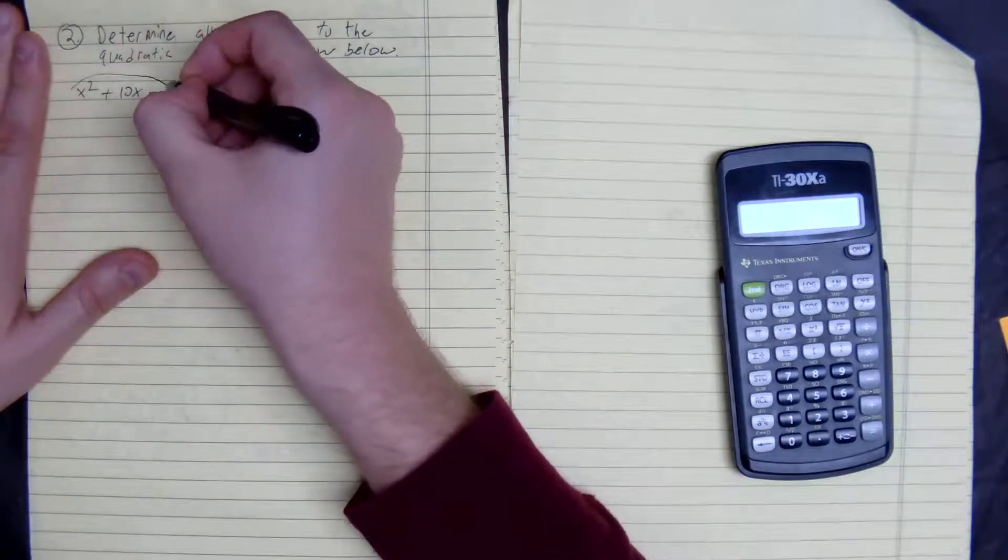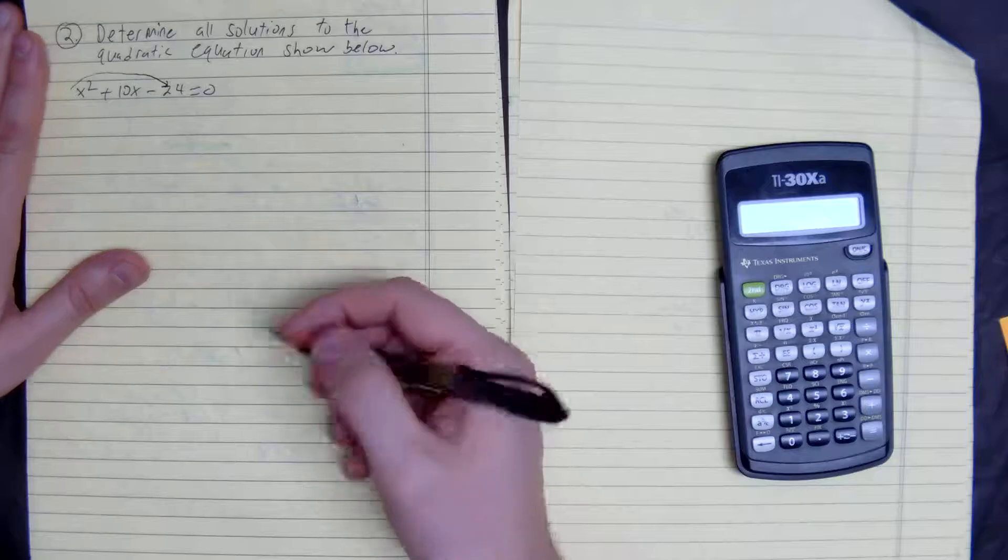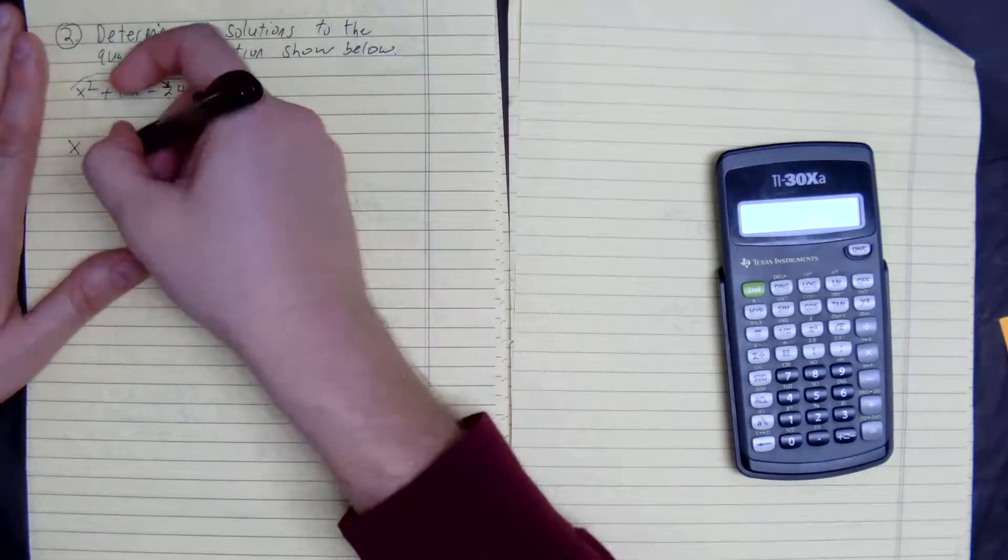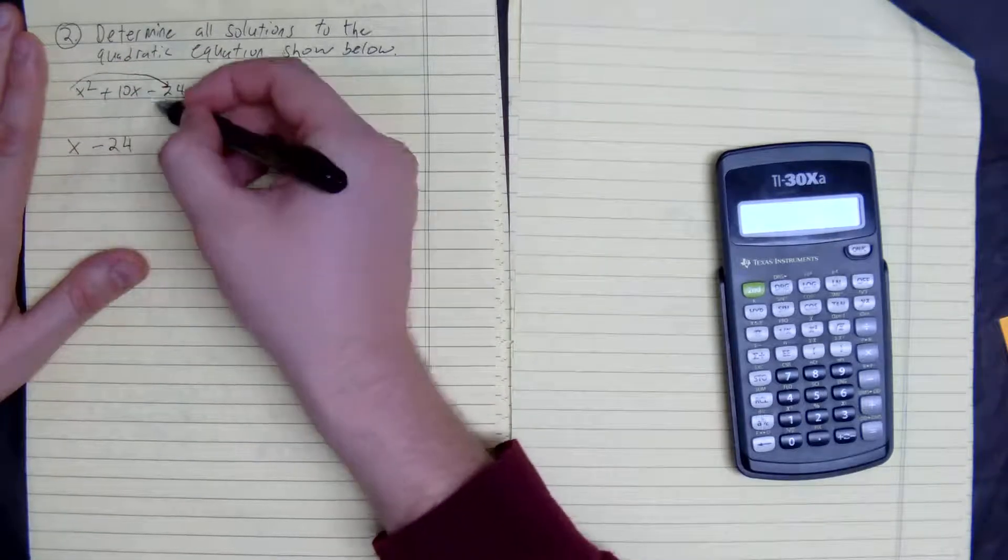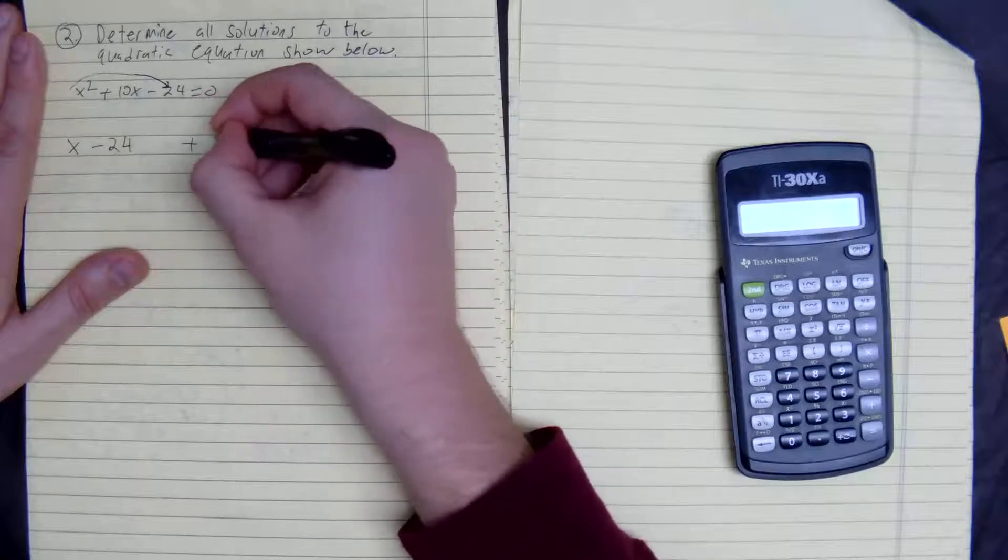So the first thing I do is I multiply the leading coefficient by the constant. So what multiplies to negative 24 and adds to 10.